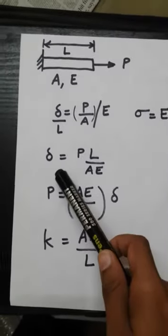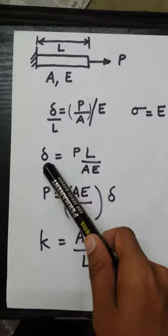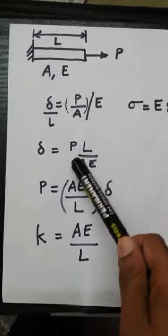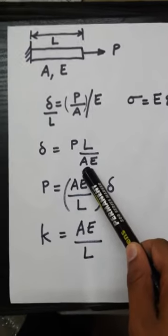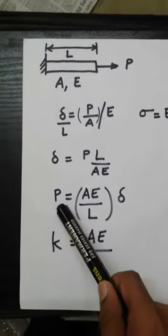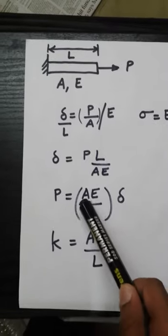In the first lecture, I explained how we can write the deflection of the bar in terms of the load acting on the bar, the length of the bar, the area of cross-section of the bar, and the Young's modulus. The load can be written in terms of delta like this.